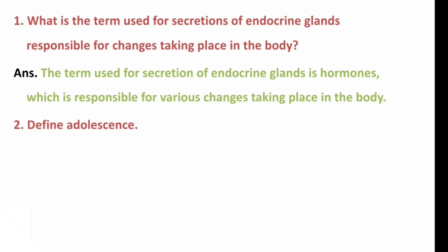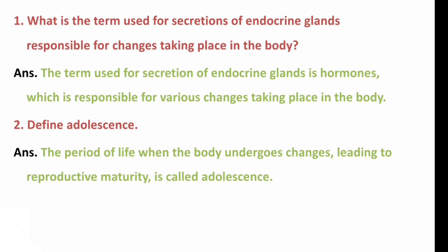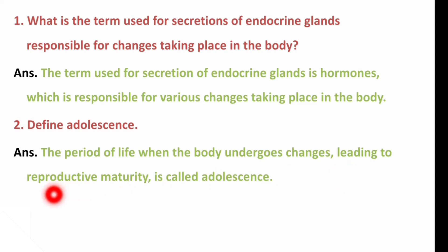Next question: Define adolescence. The period of life when the body undergoes changes leading to reproductive maturity is called adolescence.